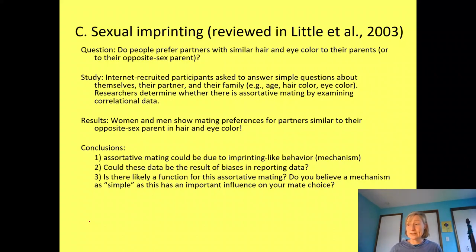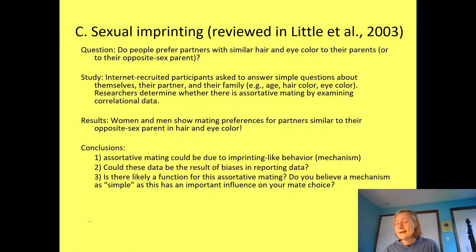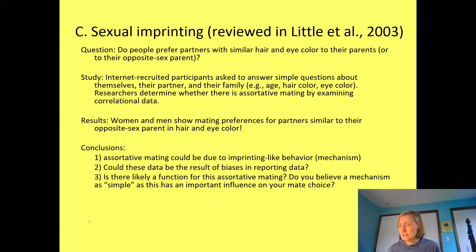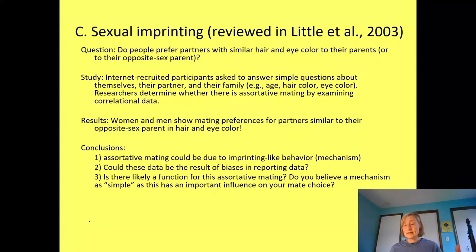The researchers excluded red-haired individuals — not enough of them to consider statistically. They were looking for what's called assortative mating — mating with somebody who's kind of like you, or in this case, like your parents. The results for women: paternal hair color and eye color was significantly related to partner hair color, but maternal hair color was not. So women tend to pick and marry people who have similarities to their dad.